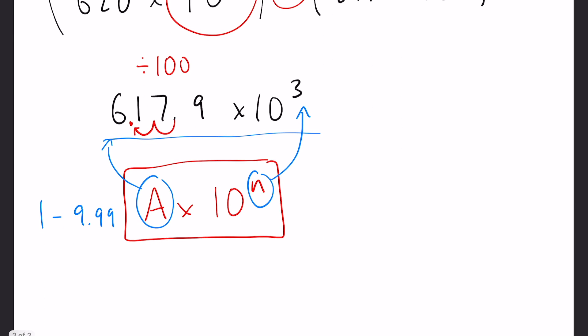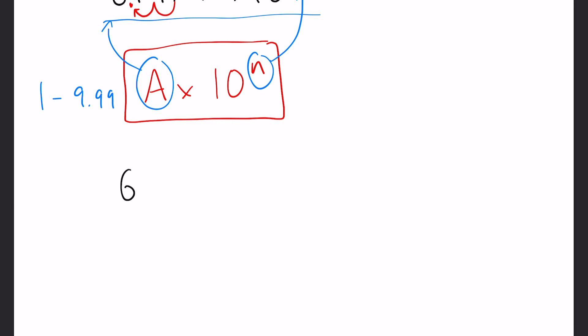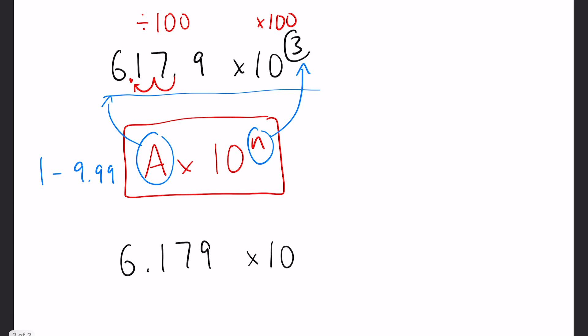So our final result we would have 6.179 times 10, and originally this number is 10 to the 3 but timing by 100 will shift that two places up so it'll become 10 to the 5. And that is our final answer. Thank you for watching and I hope that helped you.